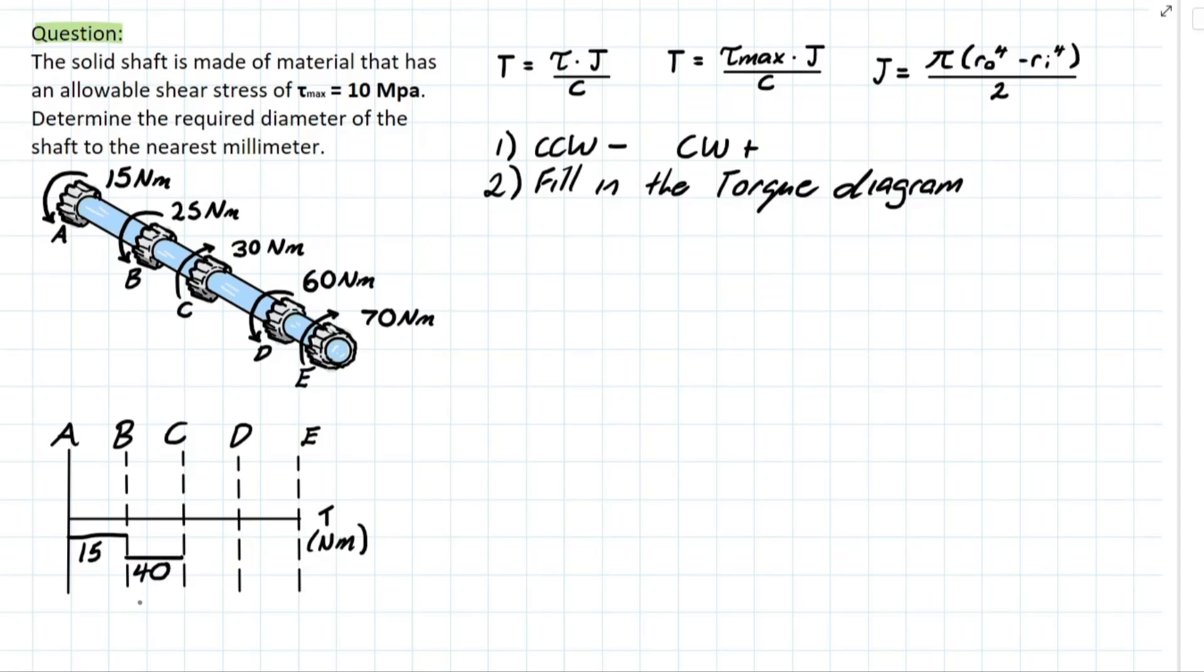Moving on to the next point in our system, we are going in the clockwise direction and we have 30. So if you have 40 minus 30, we're going to be left with 10. And if we look to the next point, we have a 60, which is in the counterclockwise direction, meaning that we have a value of 70 here. And we have 70 applied in the opposite direction at the other end, meaning that it's going to bring everything back to zero.